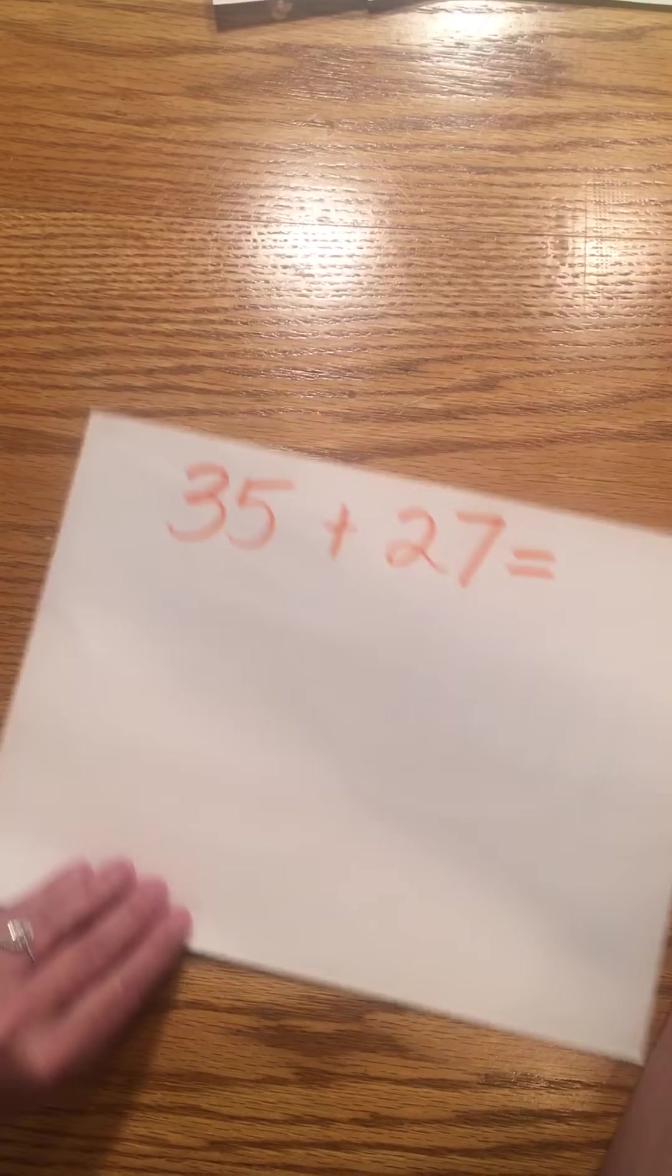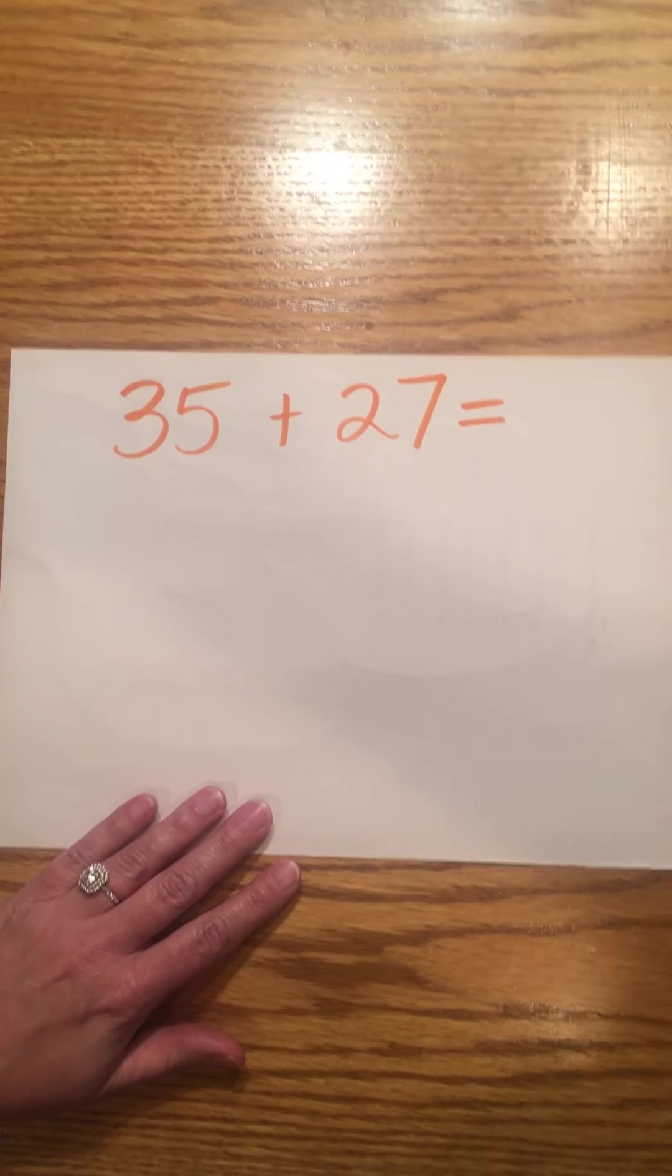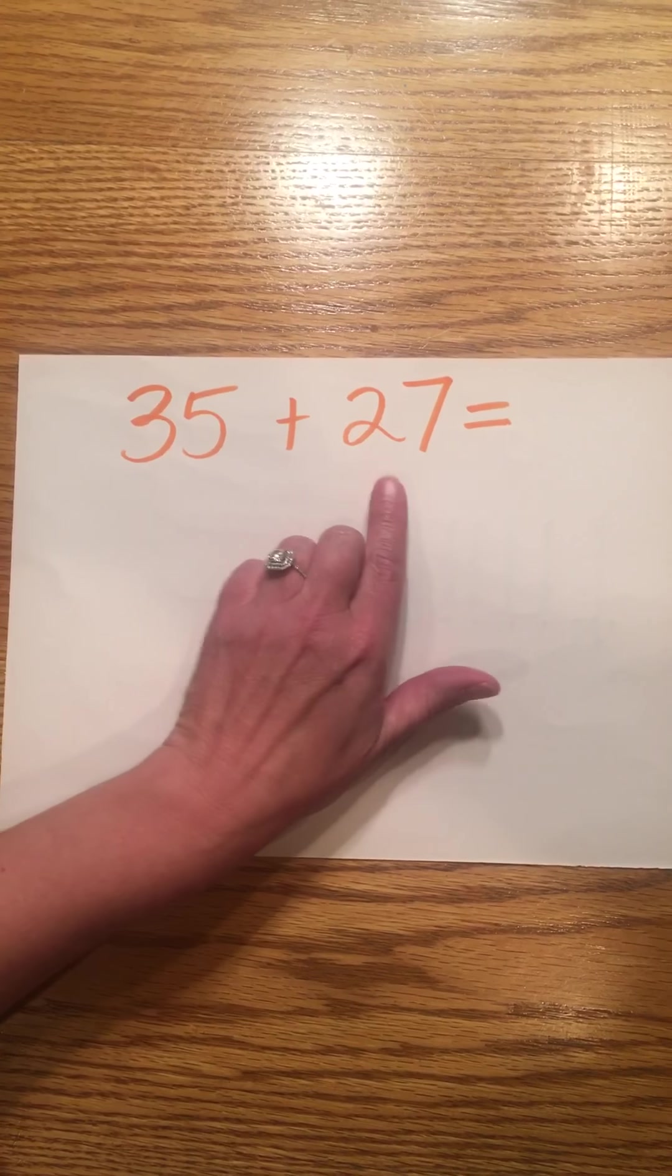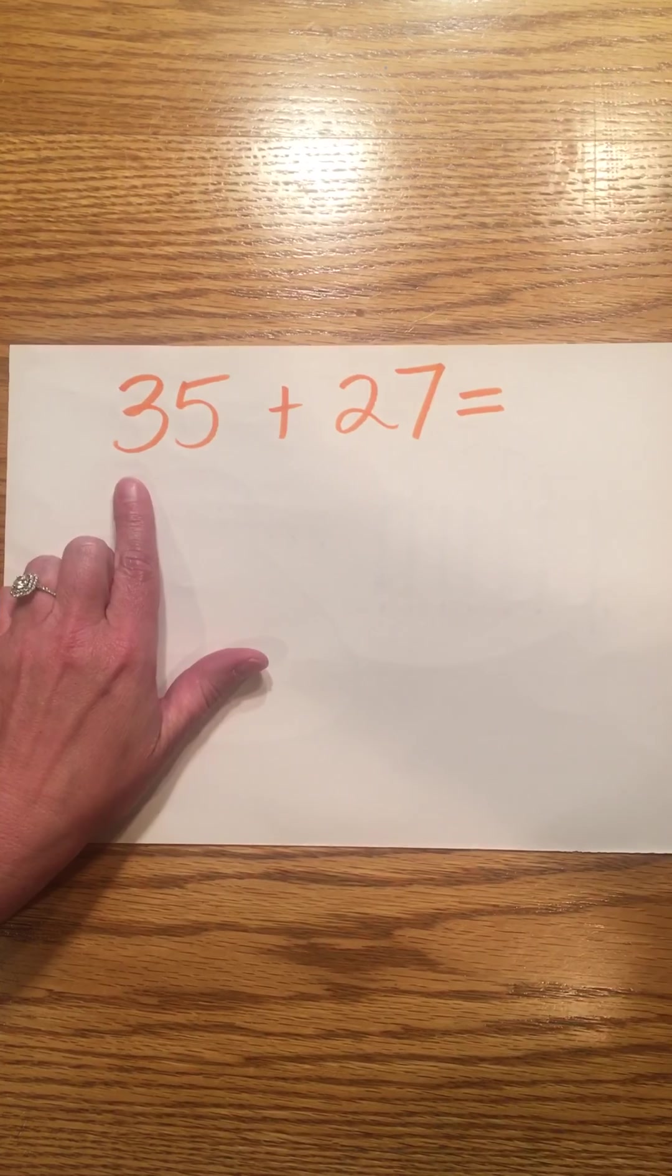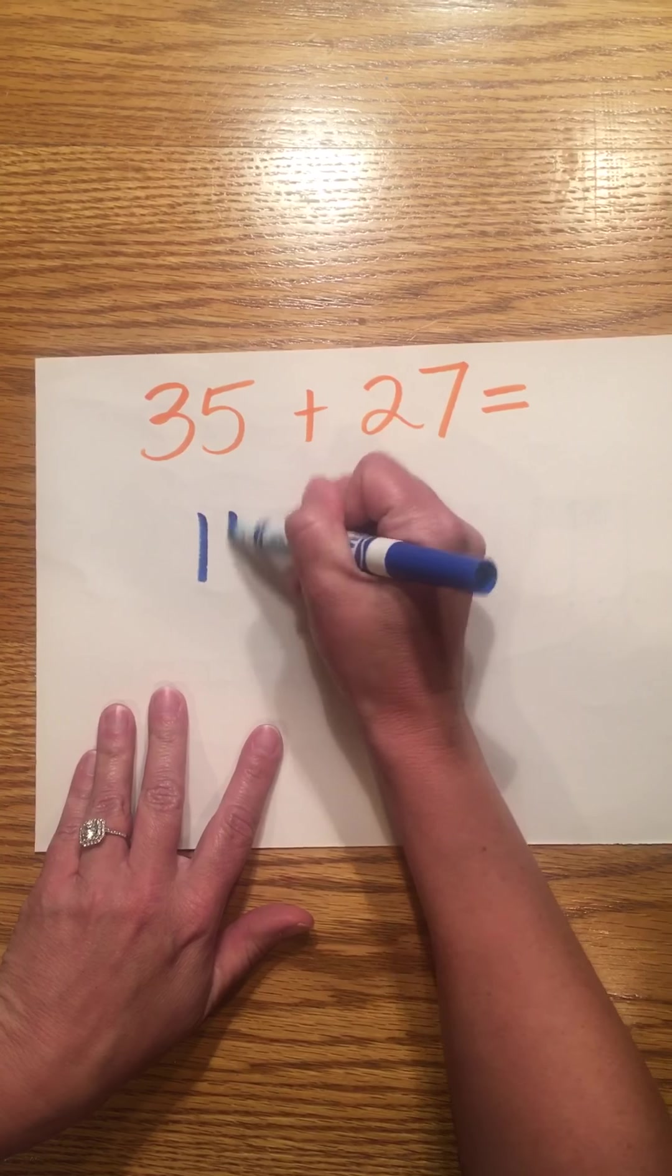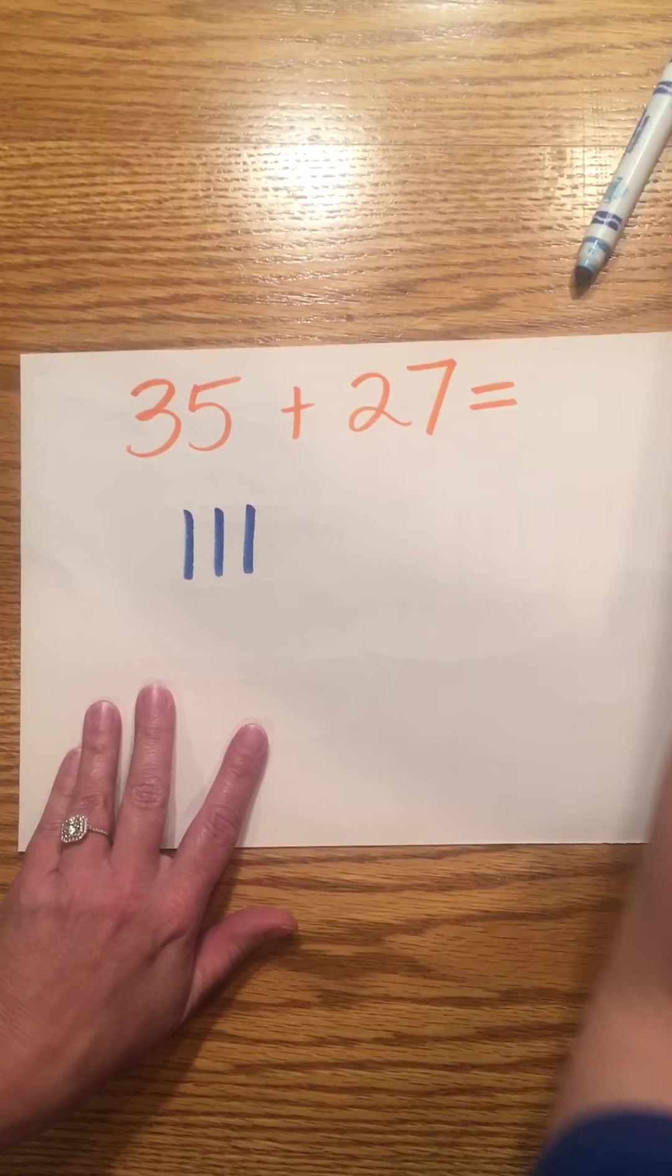Let's do another one. Let's do a double digit plus another double digit number. 35 plus 27. 35 has three tens. It has five ones.